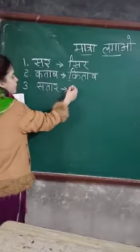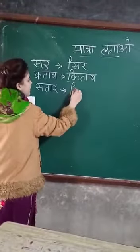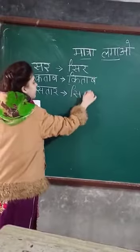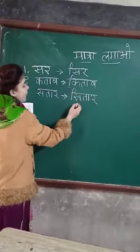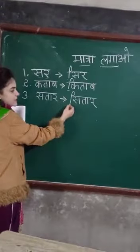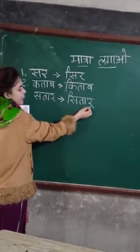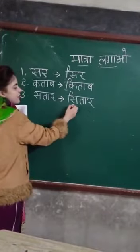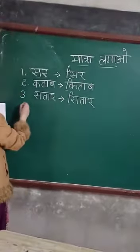Now we are going to add chhoti ee ki matra — si, ta. Now it will change into si, ta. Sar, wo chhoti ee, si, ta, ko, a, r — si, ta. Okay?